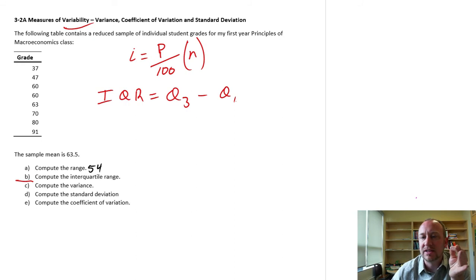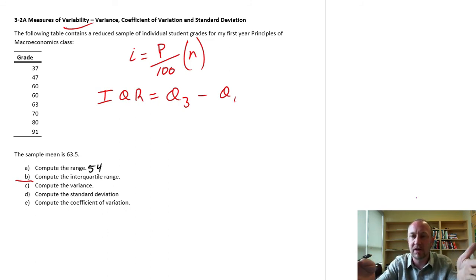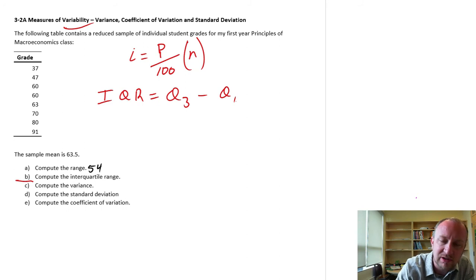So unlike the range, which tells us the difference between the smallest value and the largest value and how far the data set is spread, the interquartile range now tells us how far spread is really the middle 50 percent. Because if we look at what the quartiles are describing, let's first calculate our indices. So for Q3, that would be the 75th percentile divided by 100 times our sample size here is 8.